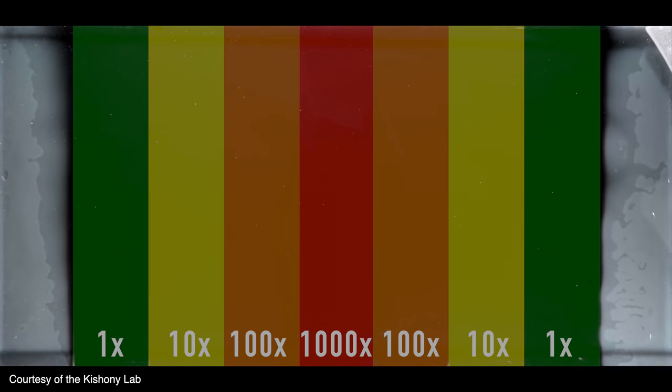These are bacteria growing into increasingly concentrated antibiotics. The bacteria stop growing when they hit the first antibiotic strip, but then a mutant appears capable of surviving in the antibiotic. Then another mutation occurs, and now the bacteria can survive 10 times the concentration. Then 100 times? And finally, after just 11 days of evolution, these bacteria can survive antibiotics a thousand times stronger than what would have killed them at the start.